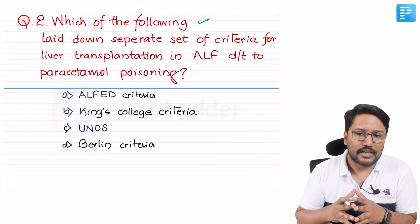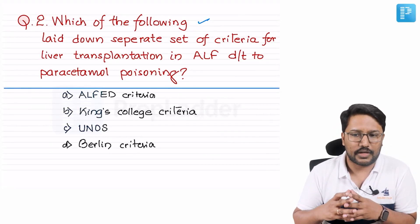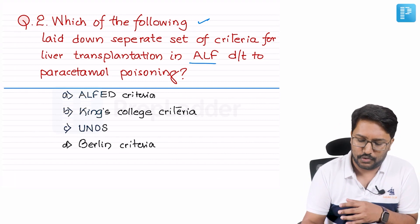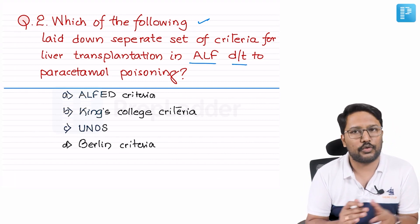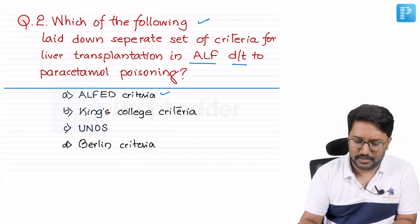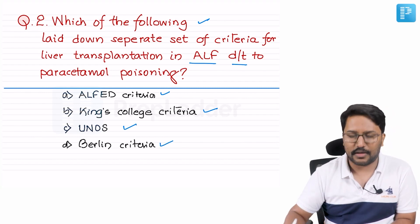Which of the following laid down a separate set of criteria for liver transplantation in acute liver failure due to paracetamol poisoning? Options are: Alfred Criteria, King's College Criteria, UNOS Criteria, and Berlin Criteria.